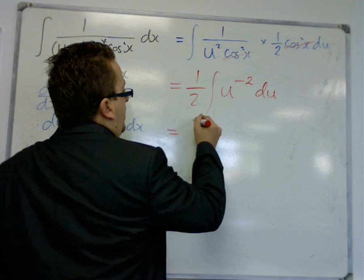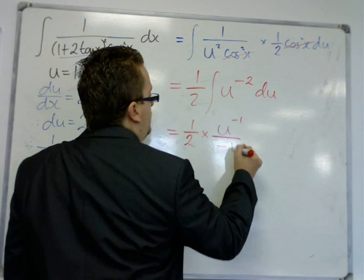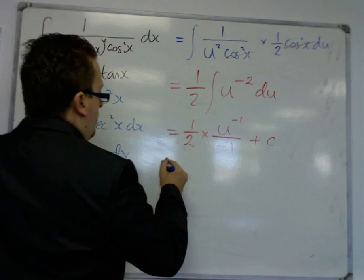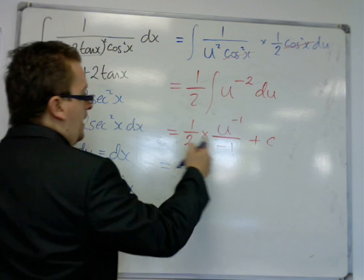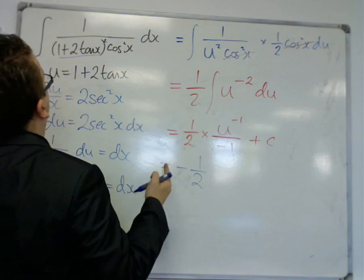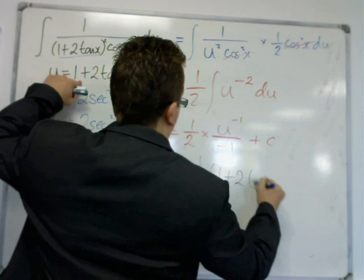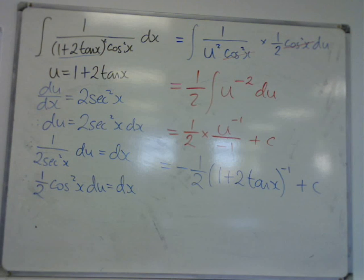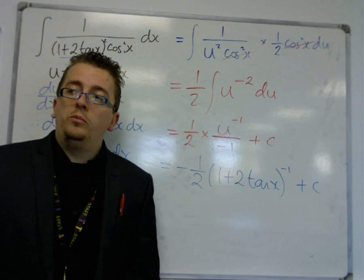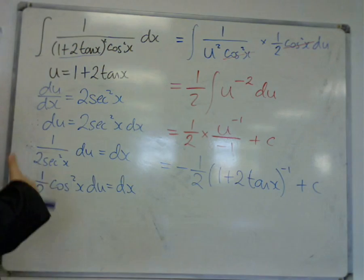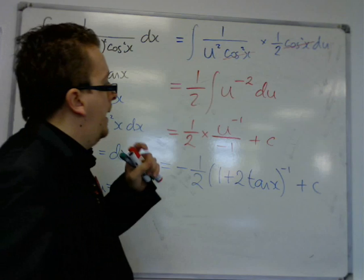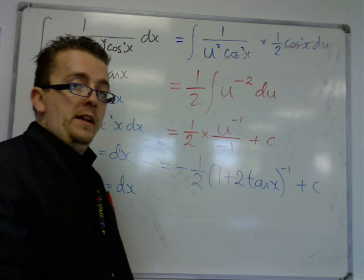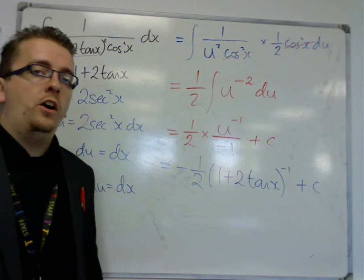So, now, it's a case of adding 1 to the power. Divide by the new power. Add the constant c. So, we've got minus 1 half. That minus 1 can come out to the front. Of u to the minus 1. So, that's 1 plus 2 tan x to the minus 1. Plus a constant c. And that's our final answer. So, here's another example using integration by substitution. It's neither reversing chain rule or log trick. It's going through exactly the process that you need to know. And it involved a little bit of trig as well. This type of problem can gain you five marks on an exam paper.